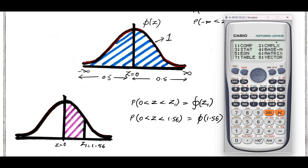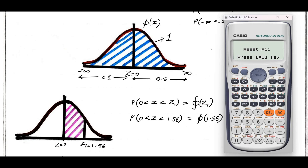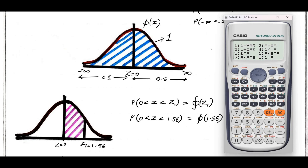First, clear all the memory: shift 9, clear all, reset. Now the calculator has been reset. First start with setup, then you have stat — press 3, then press the AC button, then go with shift 1.